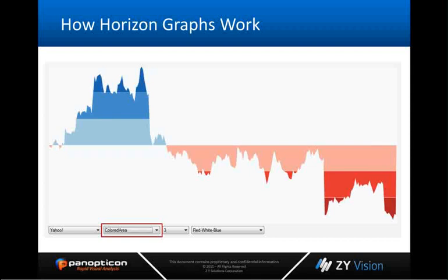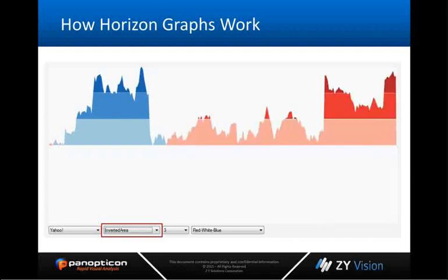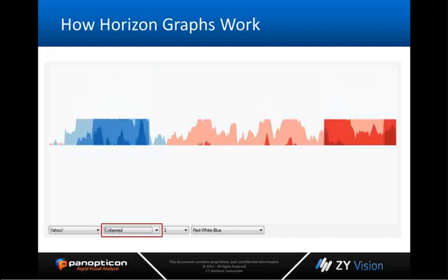Next, we invert the line, cutting the vertical screen real estate required to display the data in half. Then we collapse those color zones on top of themselves. Now we can see in a very small amount of vertical screen space the complete trace — all the data is available, we can see where the peaks and valleys are and get a very good idea of the trend, all in a very small amount of vertical real estate.